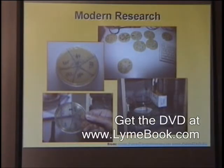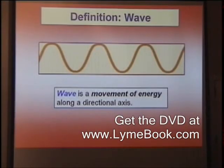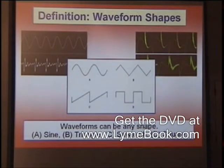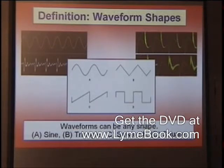You can see that each of the sections in the petri dish... A wave is a movement of energy along a directional axis. There are many different shapes of waves and combinations of shapes and almost limitless patterns. But the really simple ones, shown in the white box, are sine, triangle, sawtooth, and square.